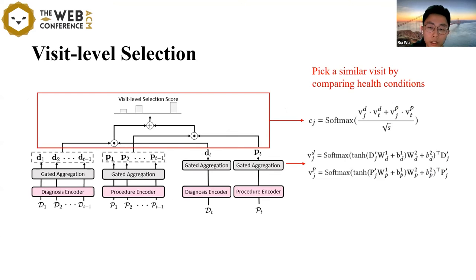First, we use the visit-level selection to pick a similar visit by comparing their health conditions. We use two gated aggregation layers to encode the visit-level health conditions of all visits by aggregating their diagnosis and procedural representations. Then we calculate the visit-level selection score of the past visit by measuring the similarity between it and the current visit.